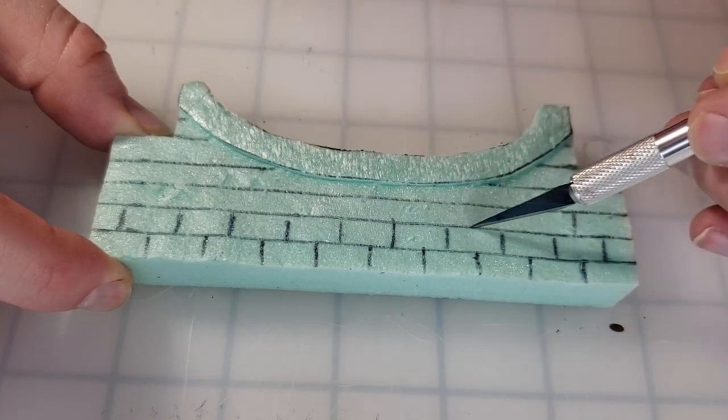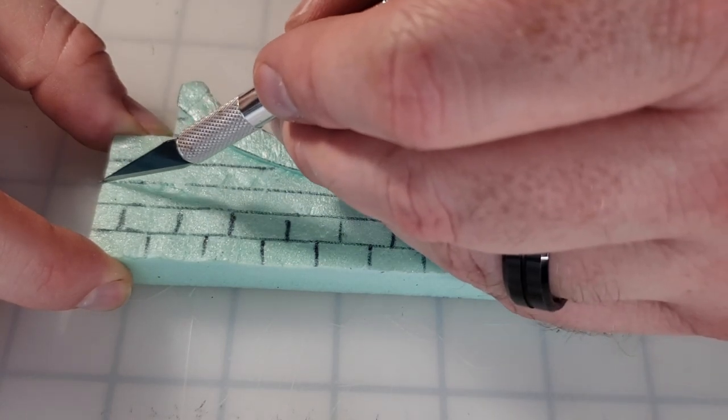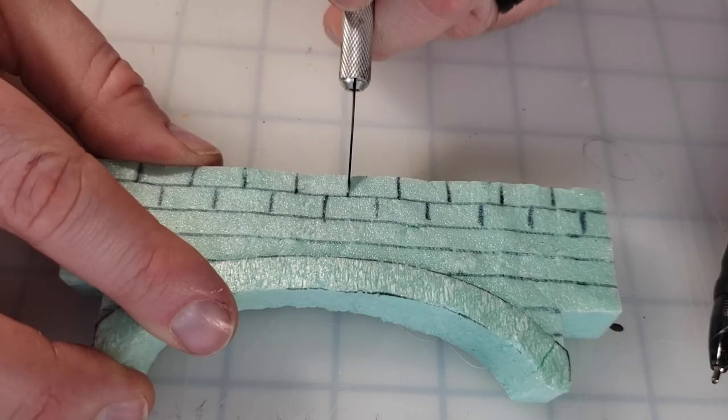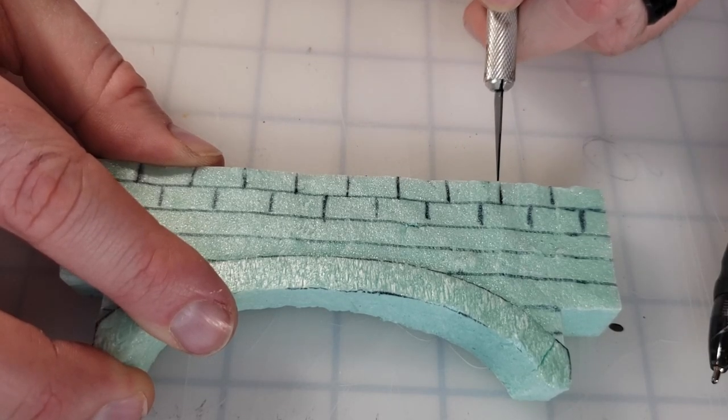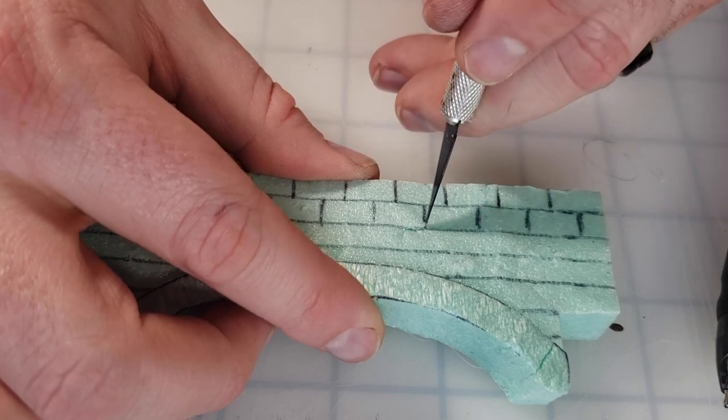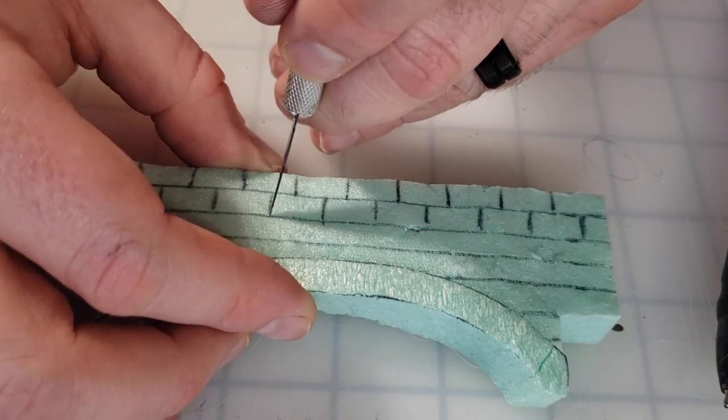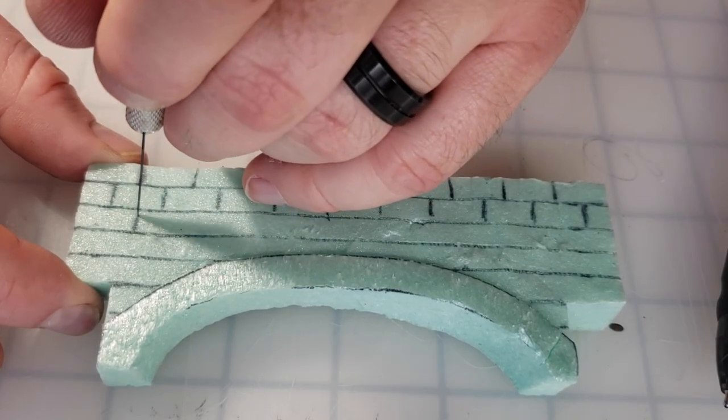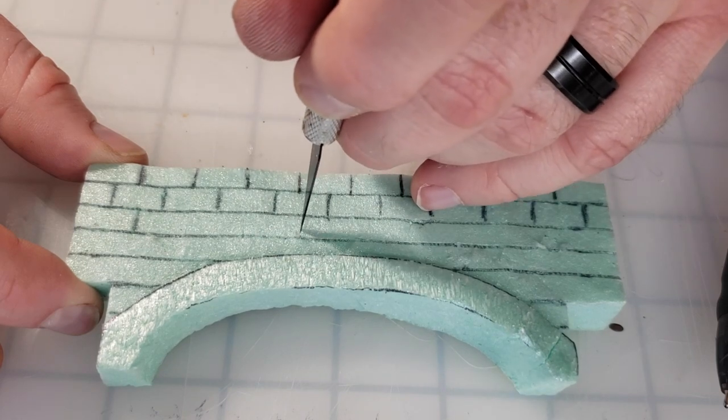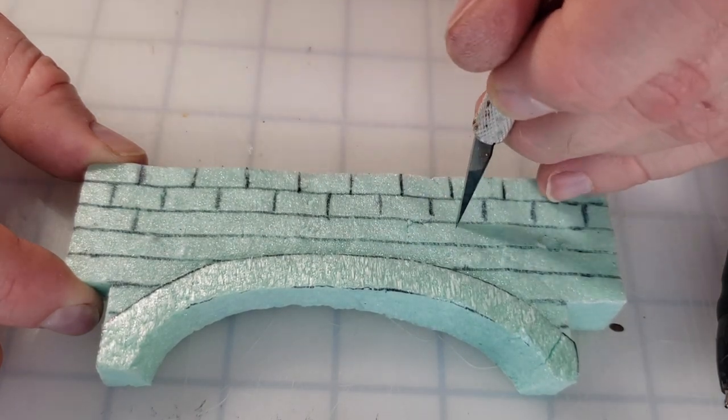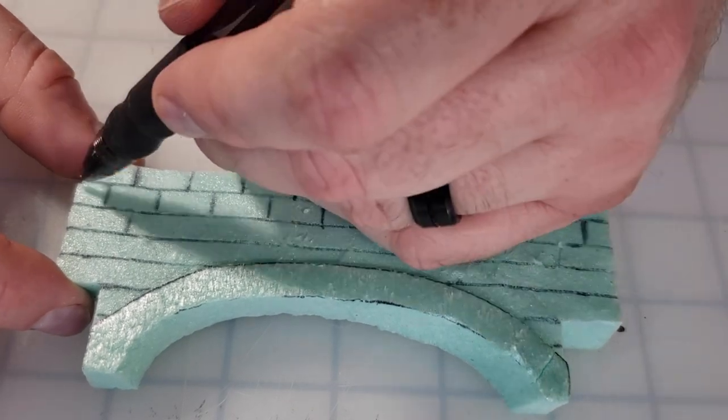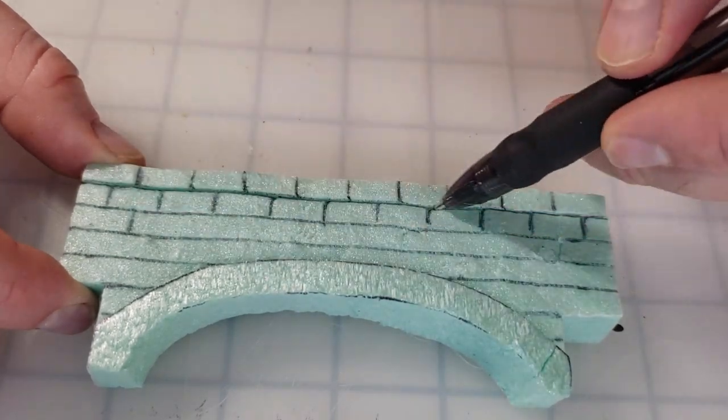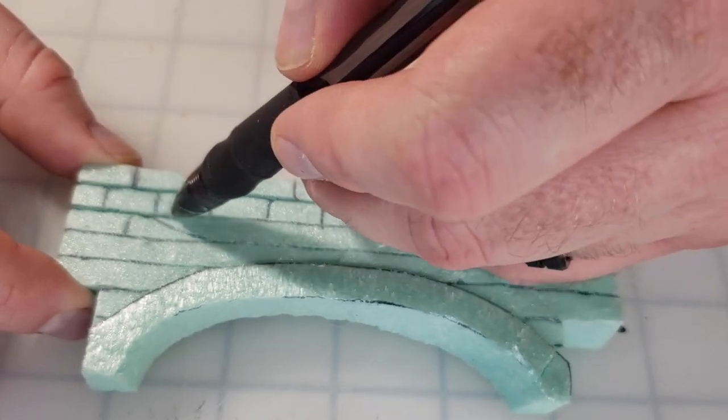Once your brick pattern has been laid out, you'll go back in with an X-Acto knife and score out those grooves. Once those grooves have been scored out, you'll go back in with a pen and fit the pen tip into those grooves. This will separate the bricks and exaggerate the mortar lines. It's gonna look great when it's painted.